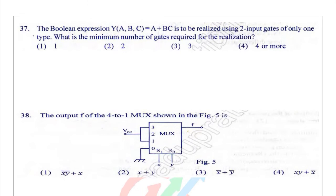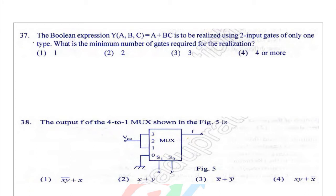Now the Boolean expression Y equals A plus BC is to be realized using two input gates only of one type. Minimum number of gates required - I will take NAND gates. I will give the input for the first NAND gate as A, so I will get A bar here, and BC here, so BC bar I got here.